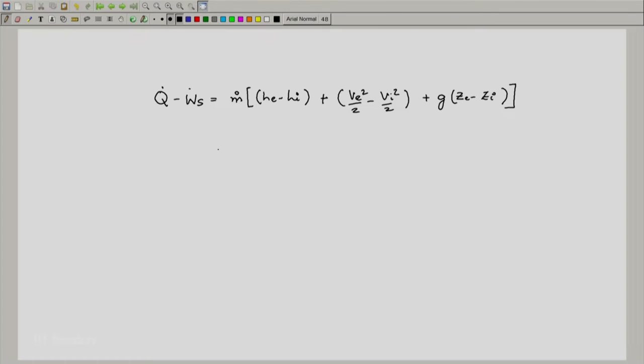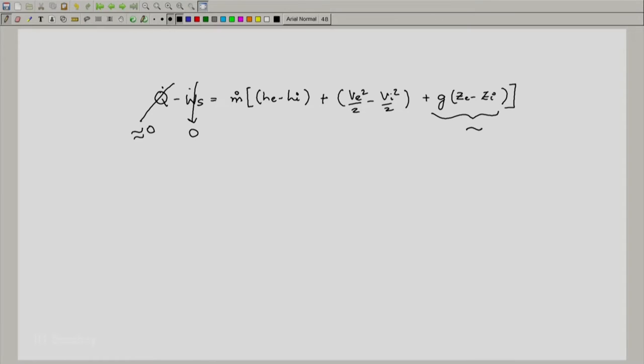The nozzle is expected to be an adiabatic device, so we say q̇ is nearly equal to zero. We are not extracting or inputting any work into the system, so this is equal to zero. Typically we do not expect any change in the potential energy of such a system and this is a reasonably good assumption to put this as equal to zero.